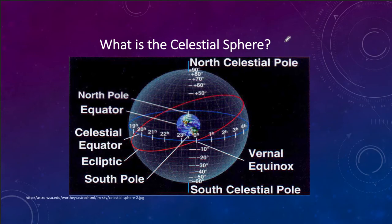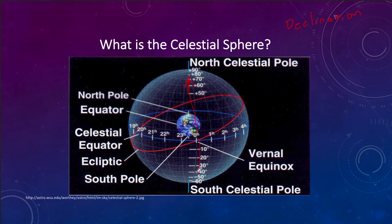Any objects you look at in the sky, you can use coordinates to locate their positioning. Astronomers use two sets of coordinates. They use declination, which tells how far you are north or south of the equator. Here is the equator on the sky, and how far you are north or south is measured up and down on that scale. You get up to 90 degrees at the pole, and zero degrees would be the equator.